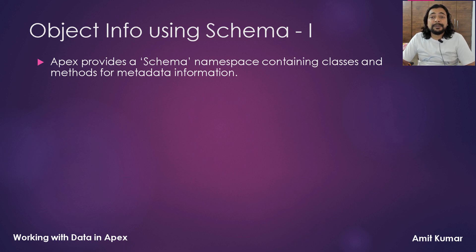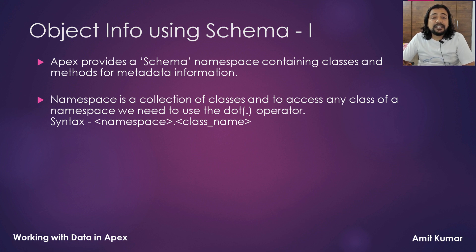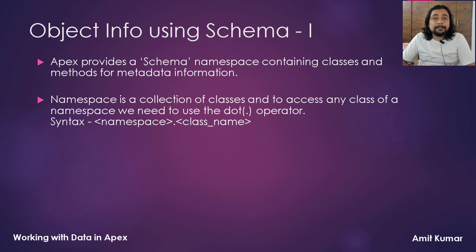Apex provides a schema namespace containing classes and methods for metadata information. We will use this schema namespace and its classes and methods to get the metadata information of objects and fields. A namespace is a collection of classes, and to access any class belonging to a specific namespace we use the dot operator — namespace dot class name. All classes used without specifying a namespace belong to the default namespace of Salesforce.